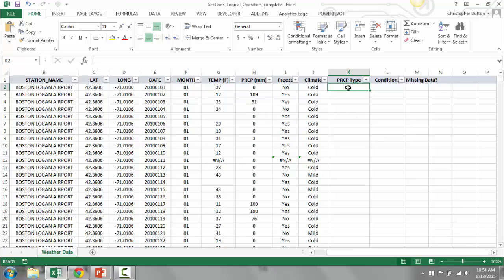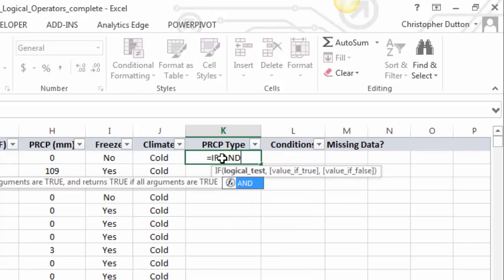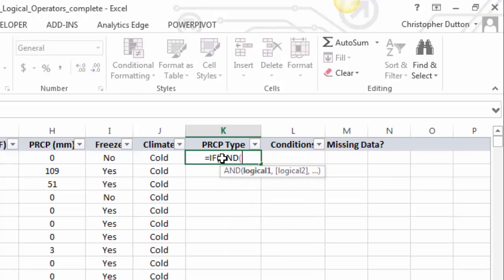So again, I'm going to use the exact same conditions that I just laid out. Precipitation type is going to be the and statement that's based on freezing and precipitation, so columns I and H. I'm going to start with equals if parenthesis and parenthesis and then list my two logicals that must both be true. So freezing equals, I'll start with yes, and precipitation is greater than zero.